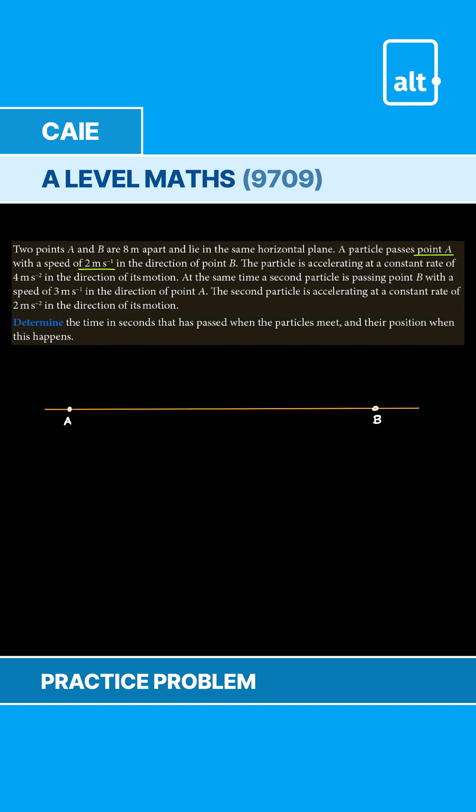At point A, the particle has a speed 2 meter per second in the direction of B. That means this is the particle and this is B over here and it has a speed of 2 meter per second.